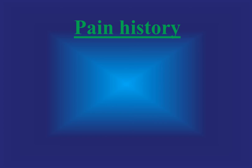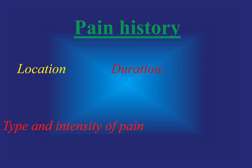Pain history depends on certain parameters, like examining the location of the pain, the type and intensity of pain — whether it is severe, moderate, or mild — the duration of the patient's pain, the stimulus of the pain such as pressure or any change in temperature, and the relieving factors such as taking analgesics or any change in temperature.